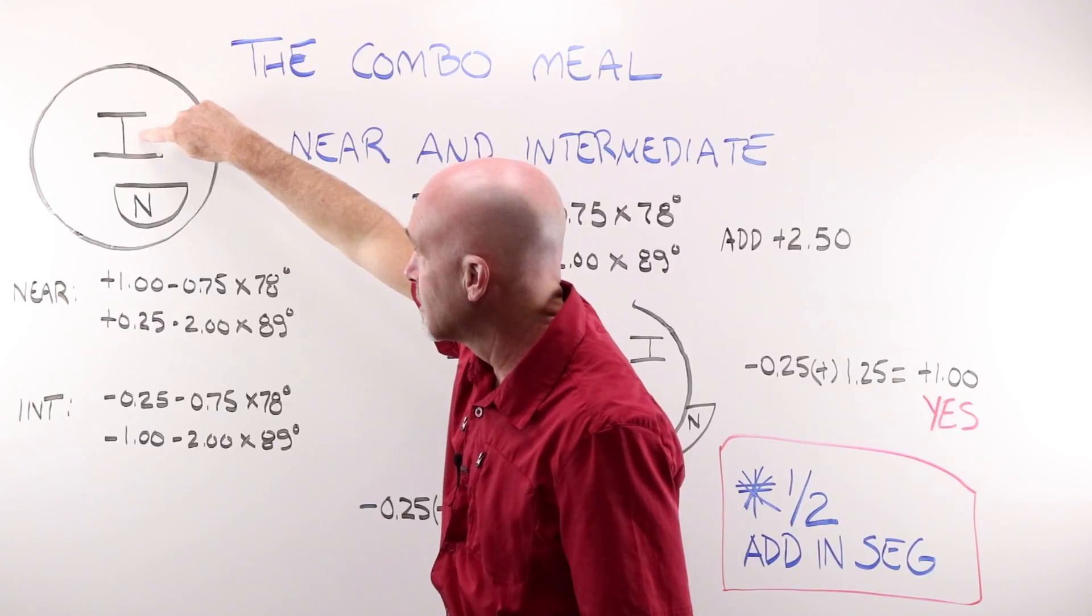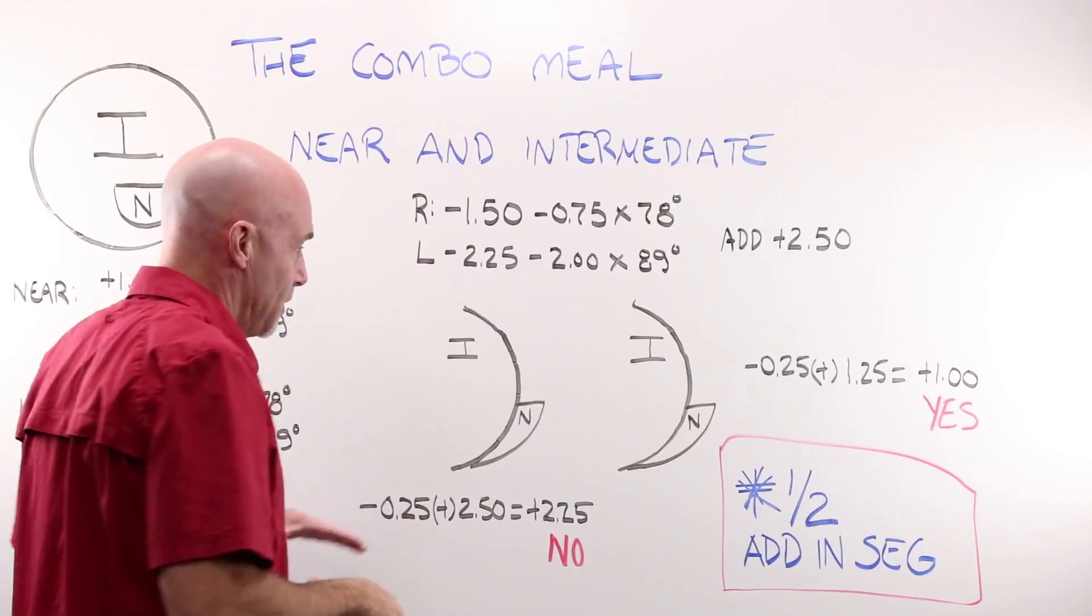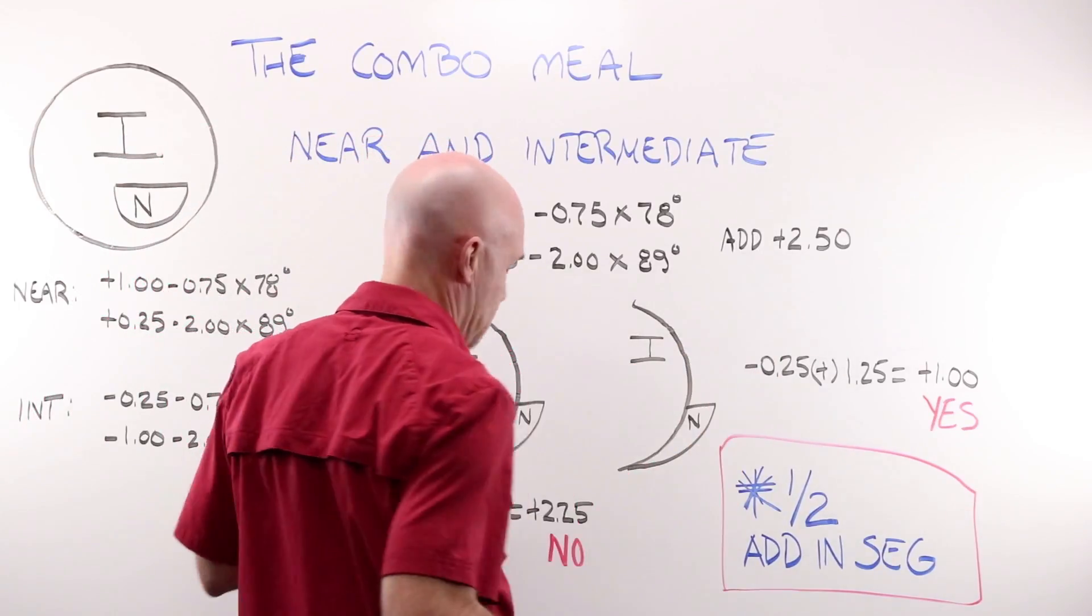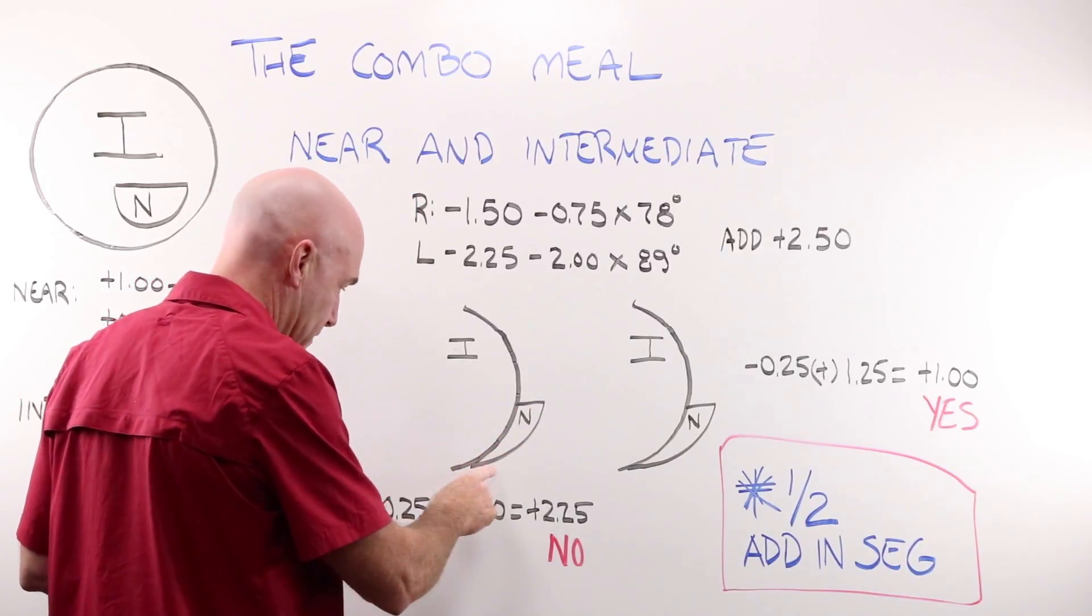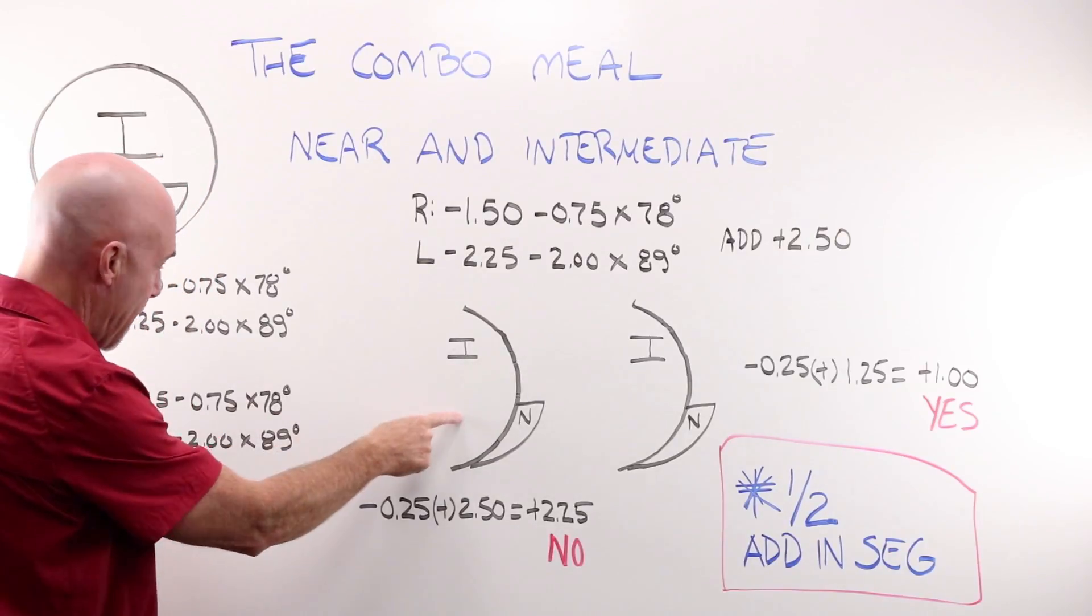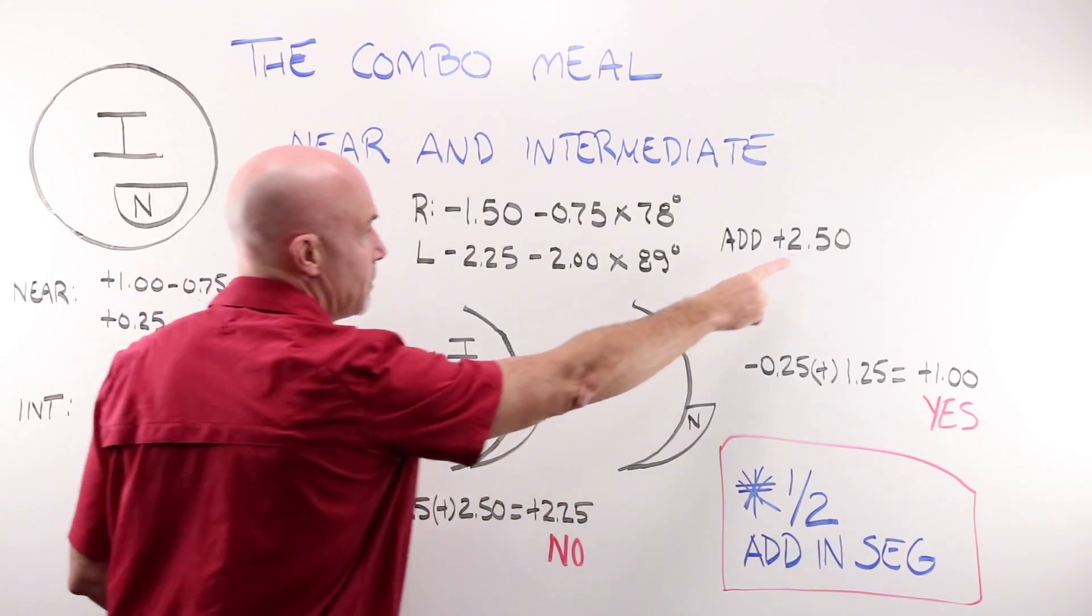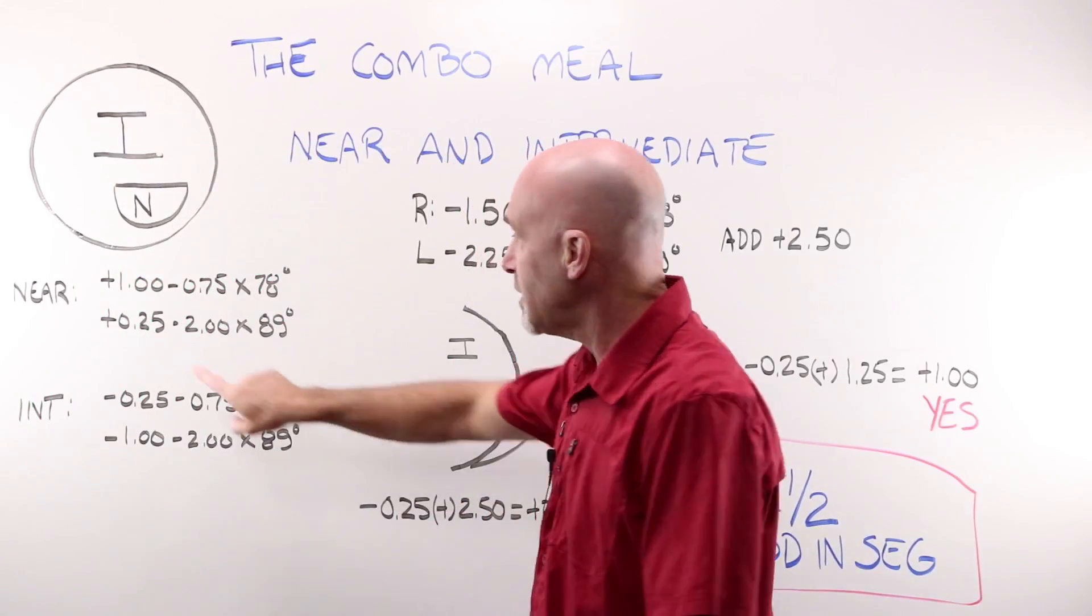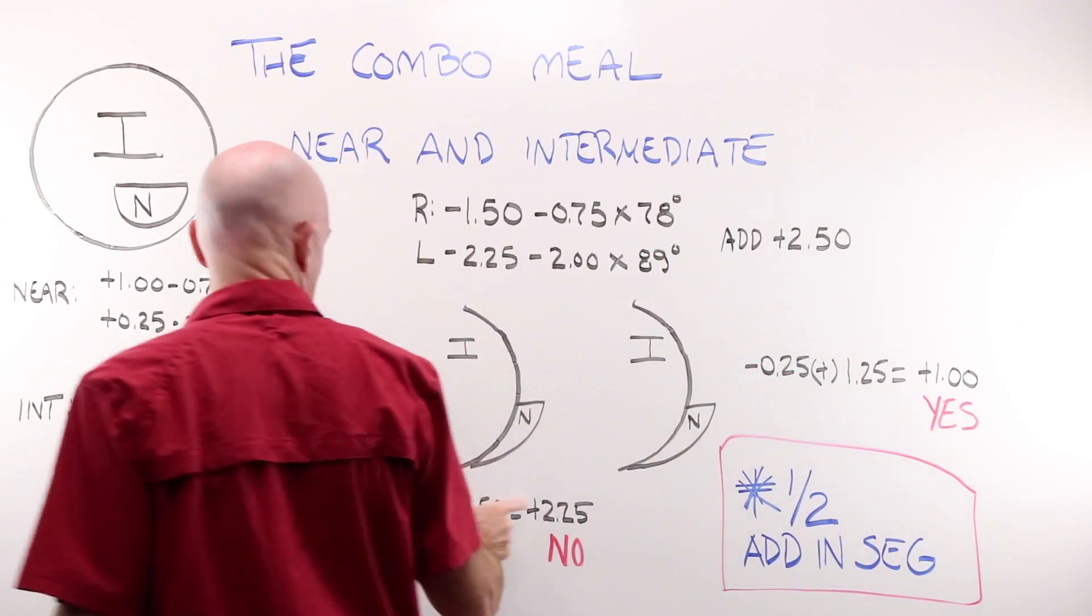What is my goal here? My goal is to have an intermediate distance here and a near distance here. So this is what would happen if you take your full add power, which would be so tempting to do, and you put that into your segment, you would have your minus 25, which is what's back here. Remember, this is what's here and you added your 250, your full add power, you'd end up at plus 225. What do you want? You want a plus one.